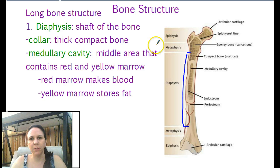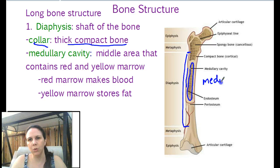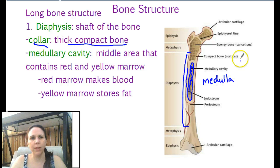It's made out of a couple different parts. It's got this outer portion right here, which is called the collar, and it's made out of thick compact bone. And then we have the inside hollow portion, which is called the medullary cavity. Because the word medulla means middle — so this is the middle cavity, medulla.